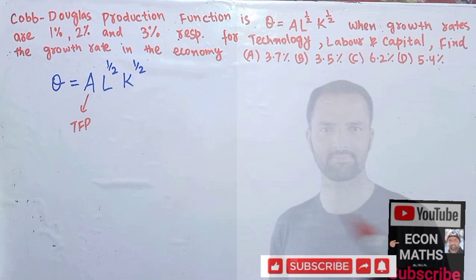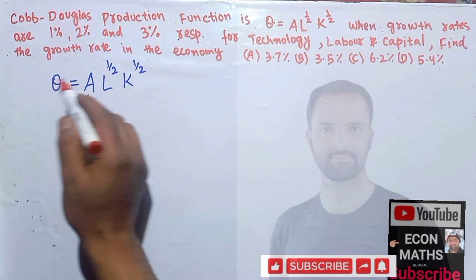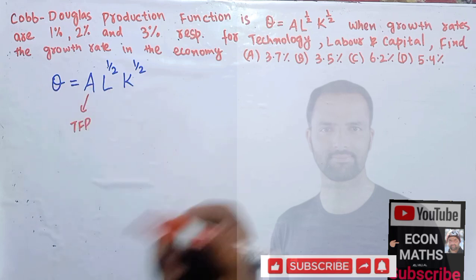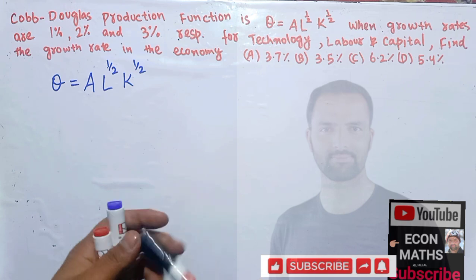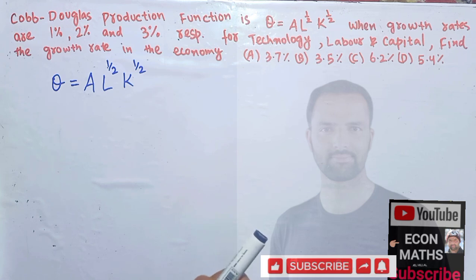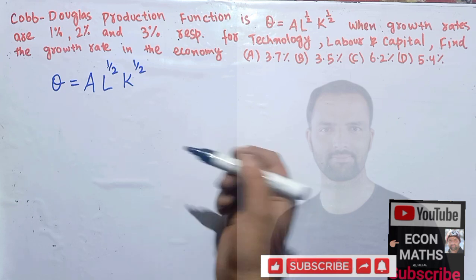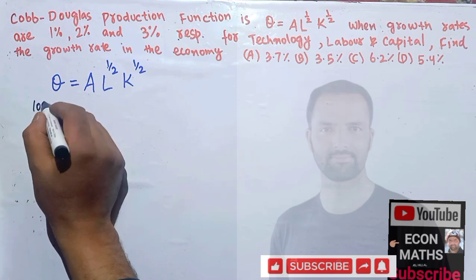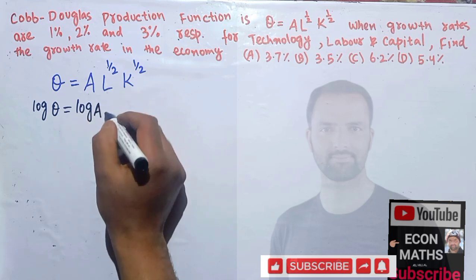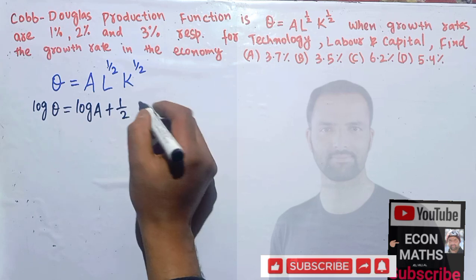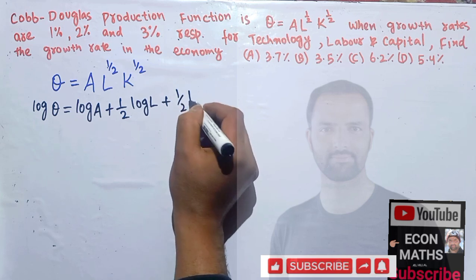Now coming to the question, let's try to solve this out. To get the growth rate in the economy, we will just take the log of this production function on both sides. I have explained the Cobb-Douglas production function in great detail in my other videos. Taking log on both sides, we have: log Q is equal to log A plus 1/2 log L plus 1/2 log K.